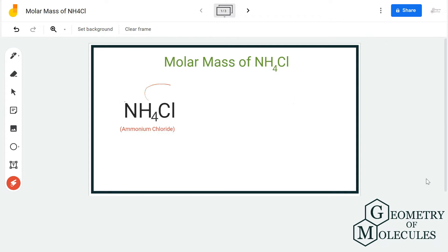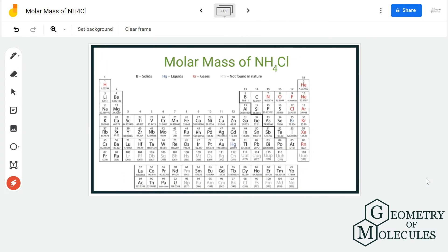This is the chemical formula for NH4Cl, in which there are four atoms of hydrogen, one atom of nitrogen, and one atom of chlorine. To find out the molar mass, we are going to look at the periodic table.